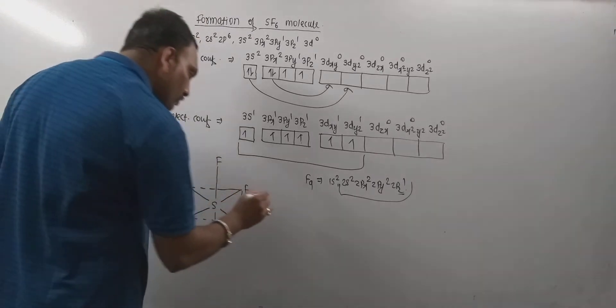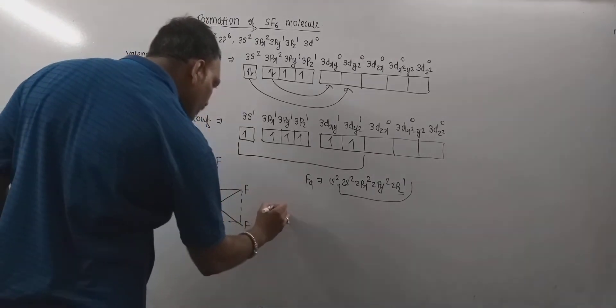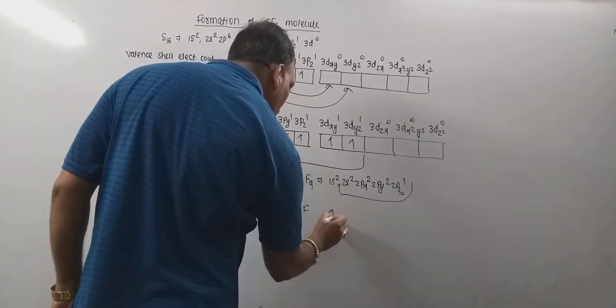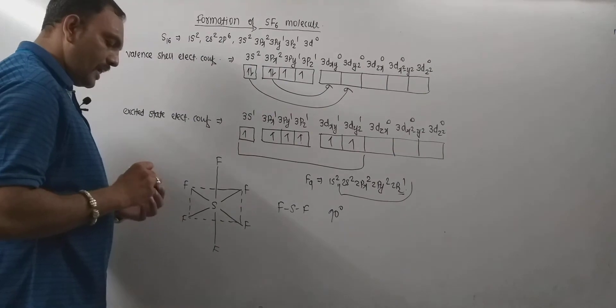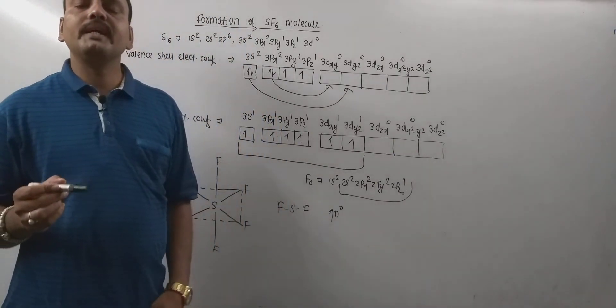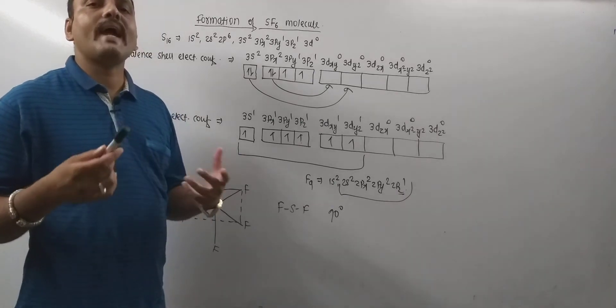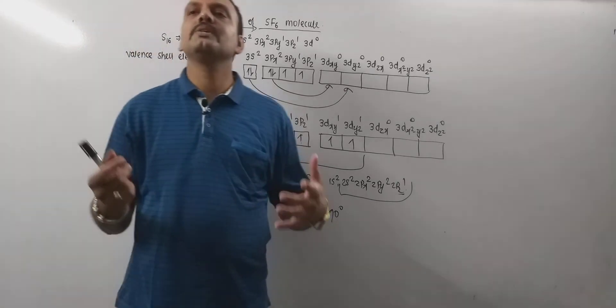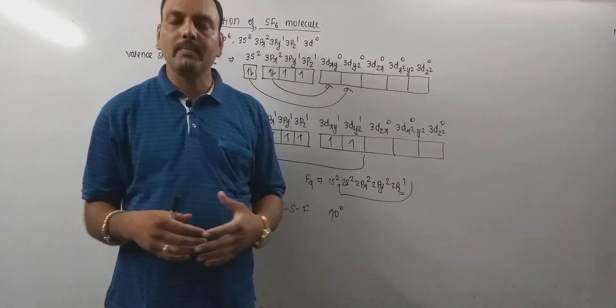Now, bond angle of FSF, FSF bond angle is found to be 90 degrees and the geometry of SF6 molecule is octahedron. So, in this way sulfur hexafluoride molecule is formed. Thank you very much.